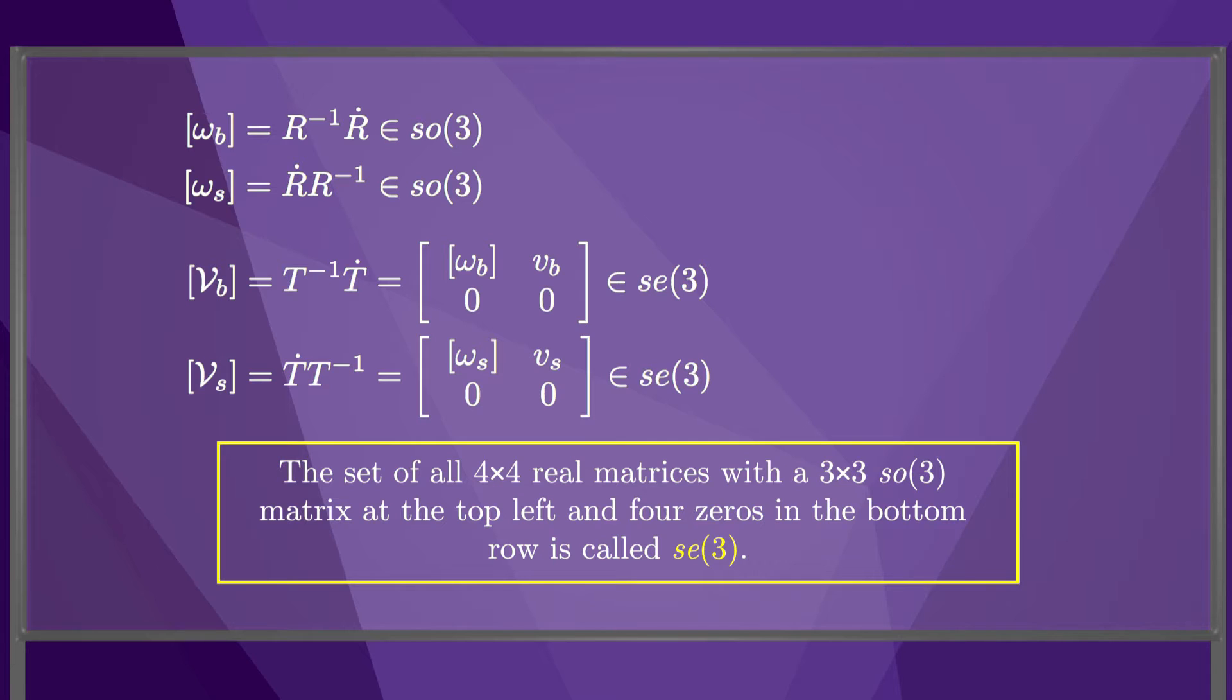Little se3 gets its name from its relationship with big SE3. The top left three by three submatrix is the skew-symmetric matrix representation of the angular velocity, as we've seen before, and the top right three by one vector is the linear velocity of a point at the origin of the frame, expressed in that frame. The bottom row is four zeros.